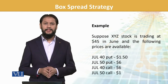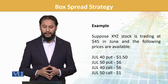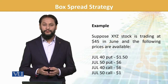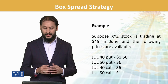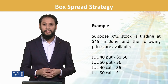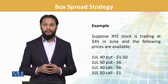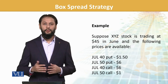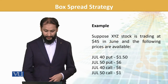Let's look at an example. Suppose XYZ stock is trading at $45 in June, and the following prices are available: July 40 put is $1.50, July 50 put is $6 (in the money), July 40 call is $6, and July 50 call is $1. You can see the price differences corresponding with the current spot price.